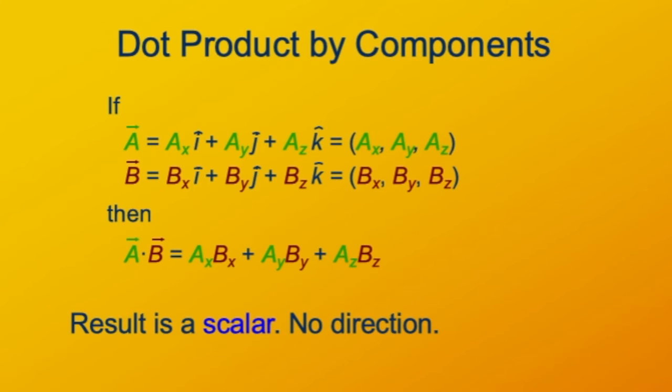You can see that the result is a scalar. All the vector nature has been taken out. There's no multiplication by unit vectors. Each term is just a number. The end result is just a number with no direction.